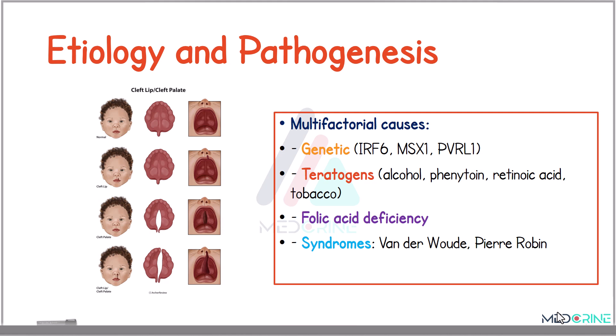The cause of cleft lip and cleft palate is multifactorial. The commonest one being genetic causes, or teratogens such as alcohol consumption during pregnancy, phenytoin use, retinoic acid, or tobacco abuse in pregnancy. Folic acid deficiency has also been implicated as one of the causes or risk factors in the development of cleft lip and cleft palate.